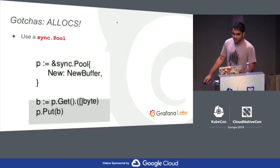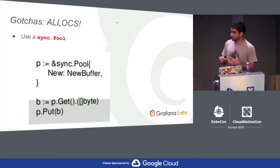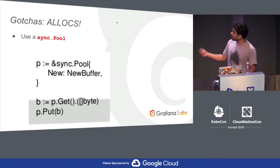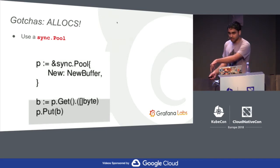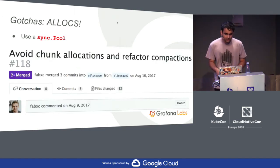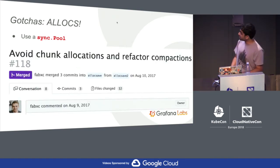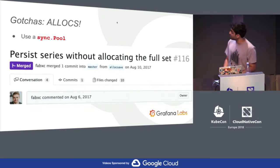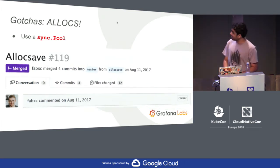Here's a small example of sync.Pool in Golang. You create a pool, get a byte slice from the pool — if it's not there, it creates one. Once you're done with the byte slice, you put it back. We had to fix allocations at a bunch of places. There are open PRs titled 'AllocSave' — nice PR name. We are still not done; we are trying to reuse memory wherever possible.